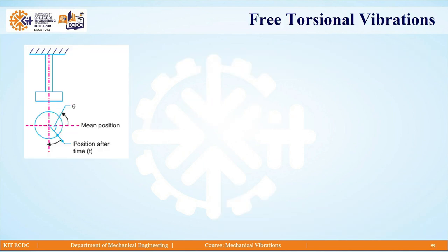As for torsional vibrations, you can see in the figure we have a shaft with a disc attached. If this disc is given an angular displacement perpendicular to the axis of the shaft, the vibrations which take place will be called torsional vibrations. Since there is no damping and no applied force, this case is known as free torsional vibrations.